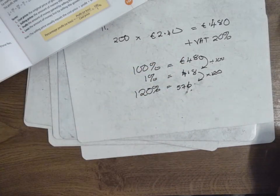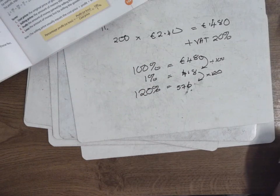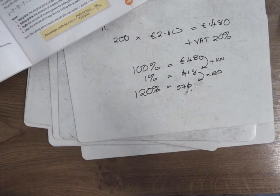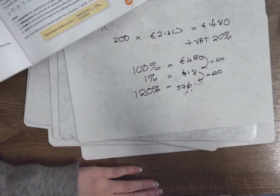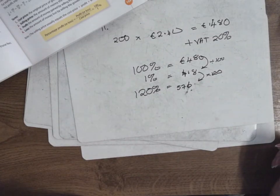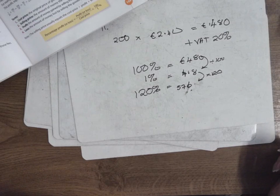Doesn't make sense, right? So before they gave me the price before VAT, I had to add on the VAT and give them the final price. But today they're going to tell me the final price. I need to take off the VAT and tell them what the price was before the VAT.